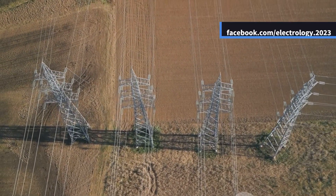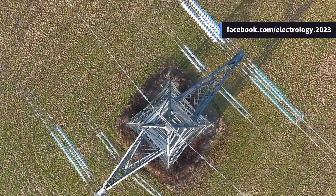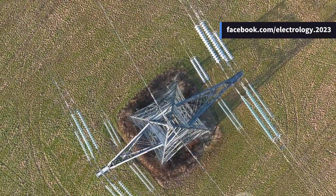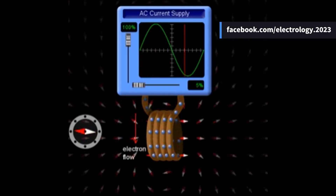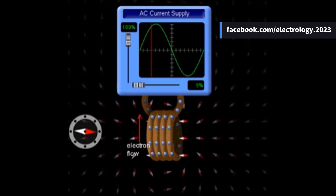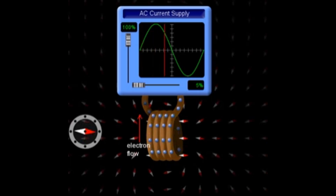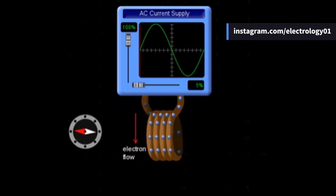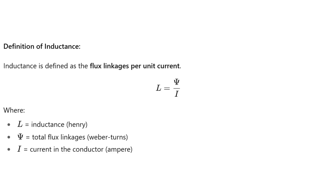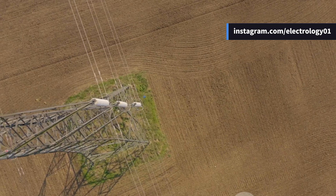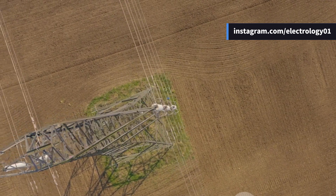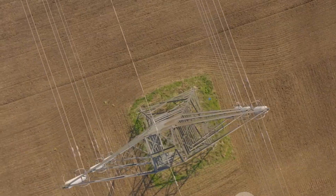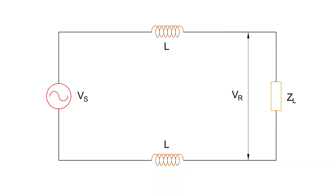Now let's talk about inductance. Whenever alternating current flows through a conductor, it produces a changing magnetic flux around it, and this flux links with the conductor itself. Because of these flux linkages, the conductor has inductance. Inductance is defined as the flux linkages per unit current. Just like resistance, inductance is also distributed along the entire line but is often considered lumped for calculation. In a single-phase line, two conductors placed parallel form a loop, and even though it may seem like just a one-turn coil, the area is so large that the inductance is significant.